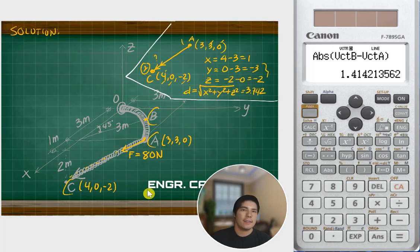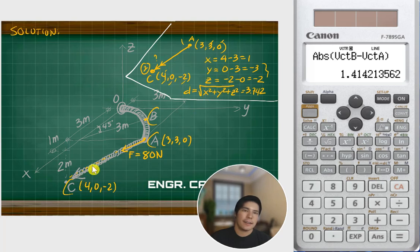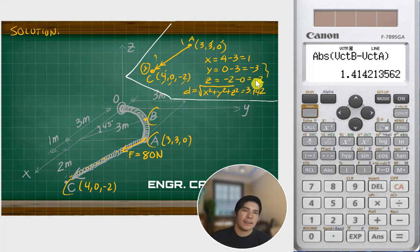Next, compute the distance from A to C. Taking point A at (3, 3, 0) and point C at (4, 0, −2): x = 4 − 3 = 1, y = 0 − 3 = −3, z = −2 − 0 = −2. The distance is the square root of x² + y² + z², giving 3.742.